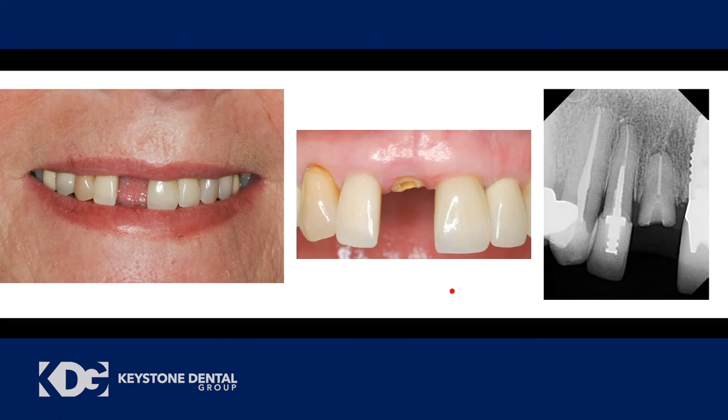Why is this my favorite patient? Because I'm going to recommend the exact same treatment I recommended several years before — and the patient already knows this. We're going to extract the tooth, immediately place the implant, immediately provisionalize, and perform a connective tissue graft simultaneously. The patient knows the treatment, knows the cost, and just wants to get started. It's an easy patient to begin treatment with.